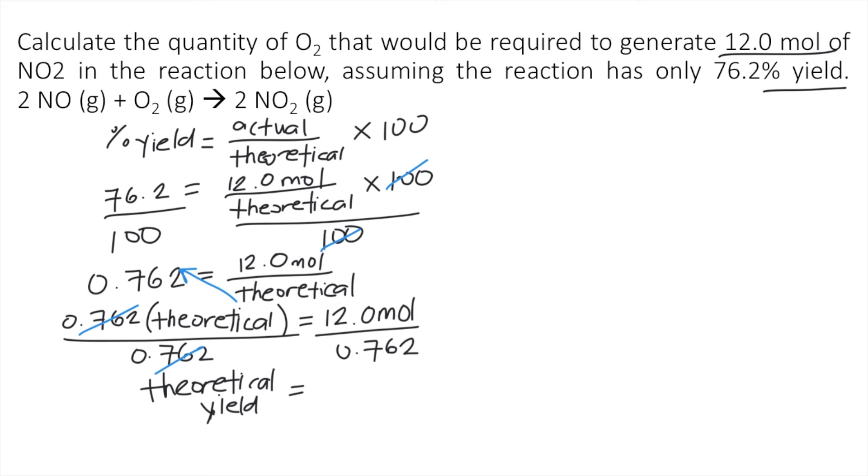And this will give you approximately 15.748 moles of NO₂. So this is the theoretical yield of NO₂. But in the problem,